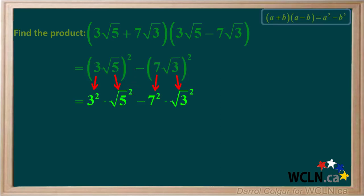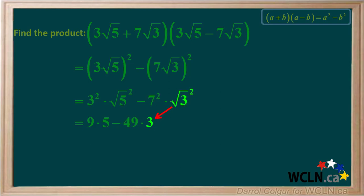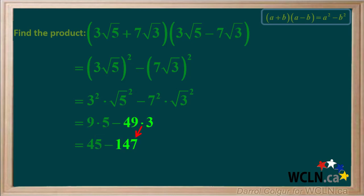This gives us 3 squared times root 5 squared minus 7 squared times root 3 squared. 3 squared is 9, the square root of 5 squared is 5, 7 squared is 49, and the square root of 3 squared is 3. So we have 9 times 5 minus 49 times 3. 9 times 5 equals 45 and 49 times 3 equals 147. 45 minus 147 comes out to negative 102, which is the final answer.